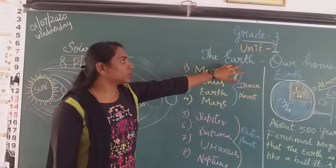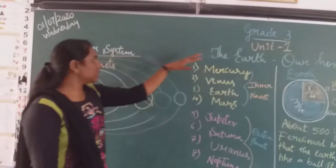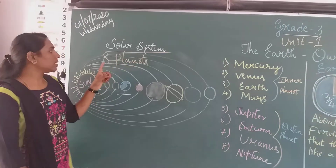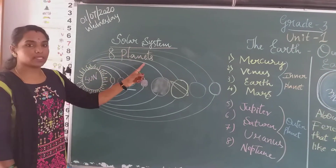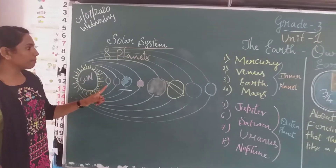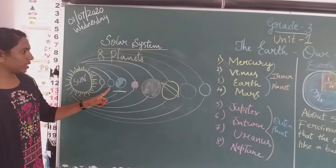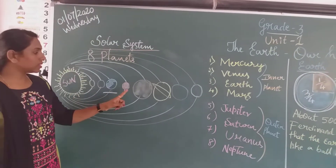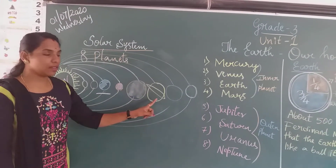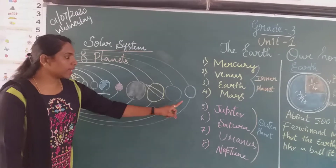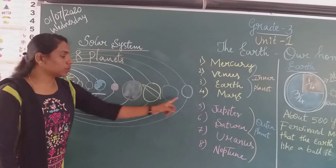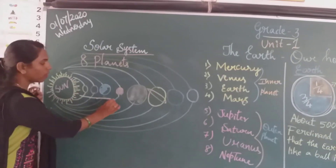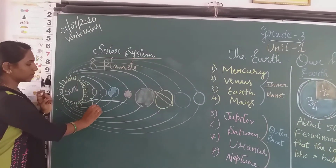Before going to the earth, we will see our solar system. We have 8 planets in our solar system: Mercury, Venus, Earth, Mars, Jupiter, Saturn, Uranus, and Neptune. These 4 planets are called inner planets.